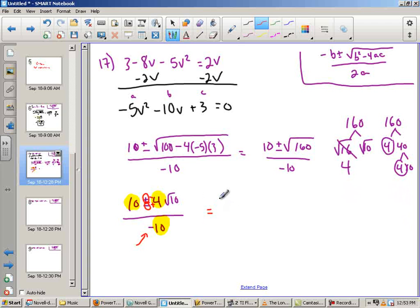So I'm going to divide all three pieces by a negative 2. So I would have negative 5 plus or minus. Remember, those are switched, but they're still both there. 2 root 10 all over 5. And that's my answer for 17.